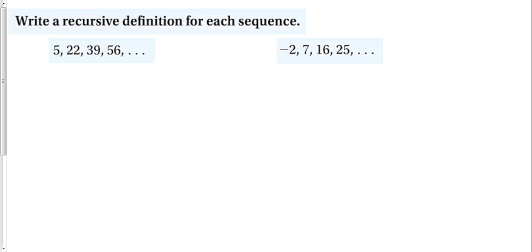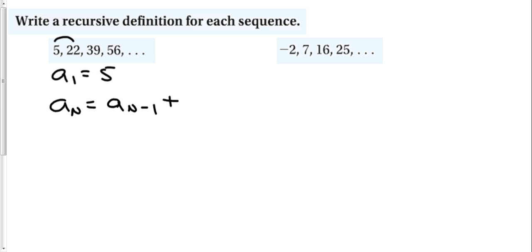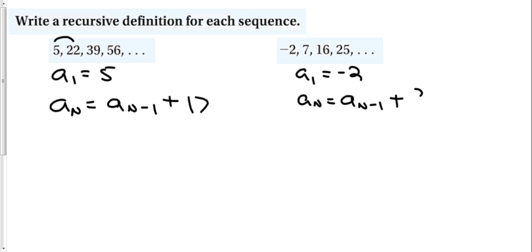A recursive definition tells us how we get from the first term to the next term. So the first term is 5 — that's part of our recursive definition, we need to define the first term. To get to the next term, we take the previous term and add something to it. In this case, from 5 to 12 we add 7. These two together are a recursive definition. The next one starts at negative 2, and to get to the next term we add 9.